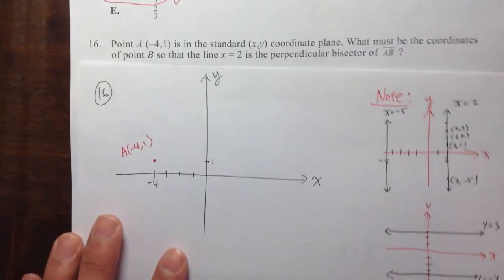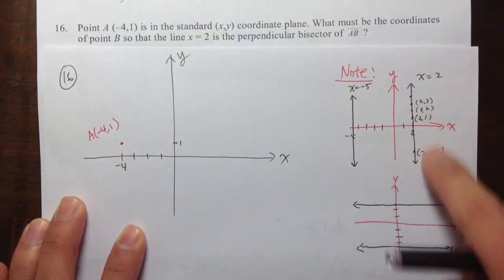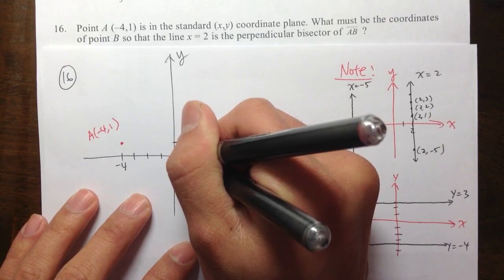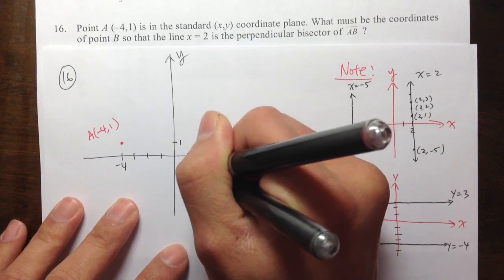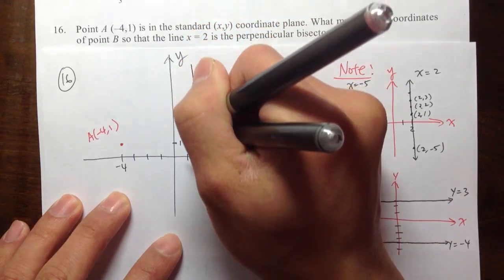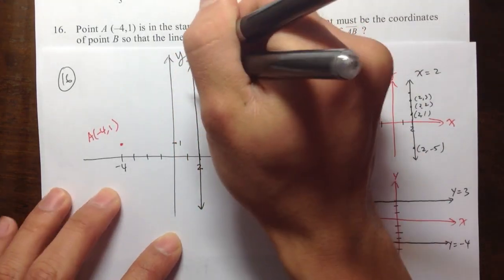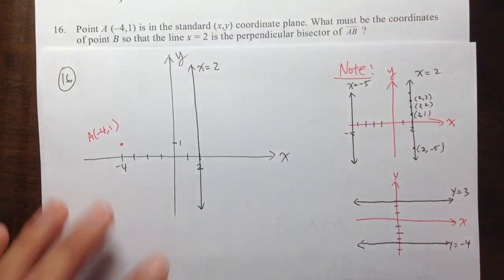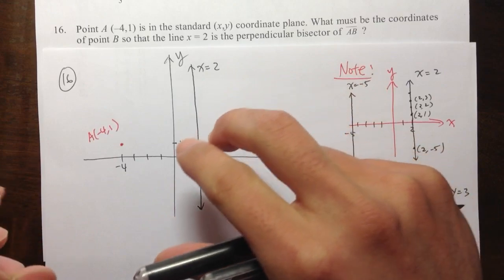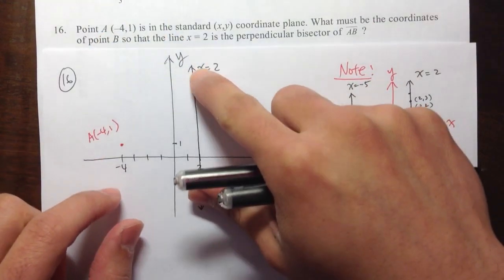In this case, we have x equals 2. So to graph that, it's exactly this one right here. I need to go to the x value 2. So let me do 1, 2. So that's my 2. And I'm going to draw a vertical line. So this is the line with the equation x equals 2. Okay, so this is pretty much putting all the things that we have. We have point A and then we have the line.